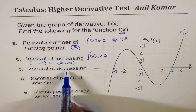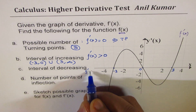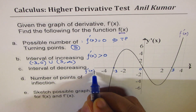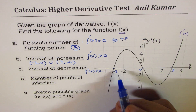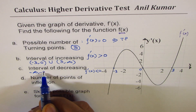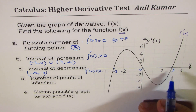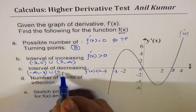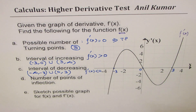Interval of decreasing: when the derivative is less than zero, the function will be decreasing. In this case it is from minus infinity to minus three, and from zero to three — that is, (-∞, -3) union (0, 3). From the derivative we easily get all this information.